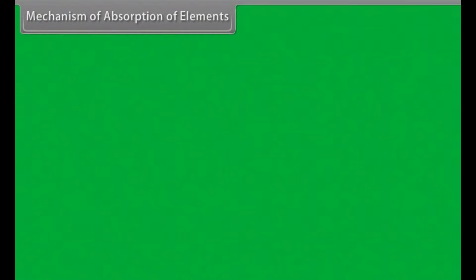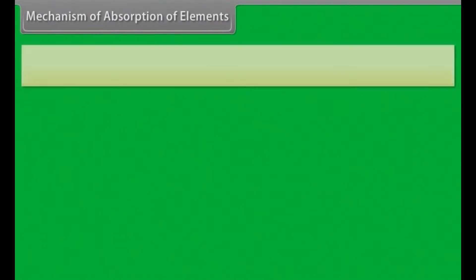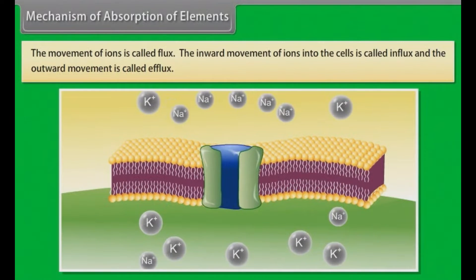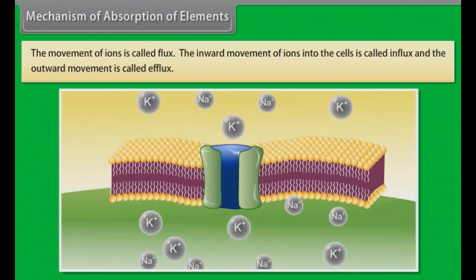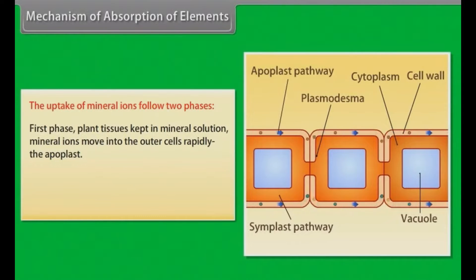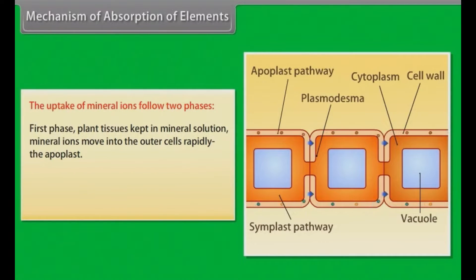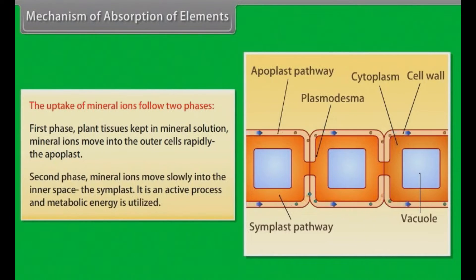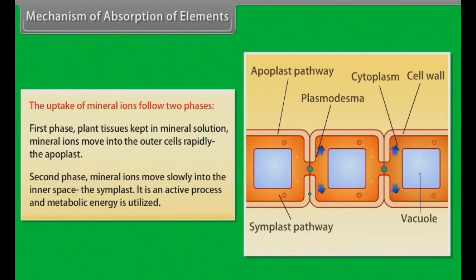Mechanism of absorption of elements: the movement of ions is called flux. Inward movement into cells is called influx; outward movement is called efflux. Uptake of mineral ions follows two phases: in the first phase, mineral ions move rapidly into the outer cells — the apoplast. In the second phase, ions move slowly into the inner space — the symplast. This is an active process in which metabolic energy is utilized.